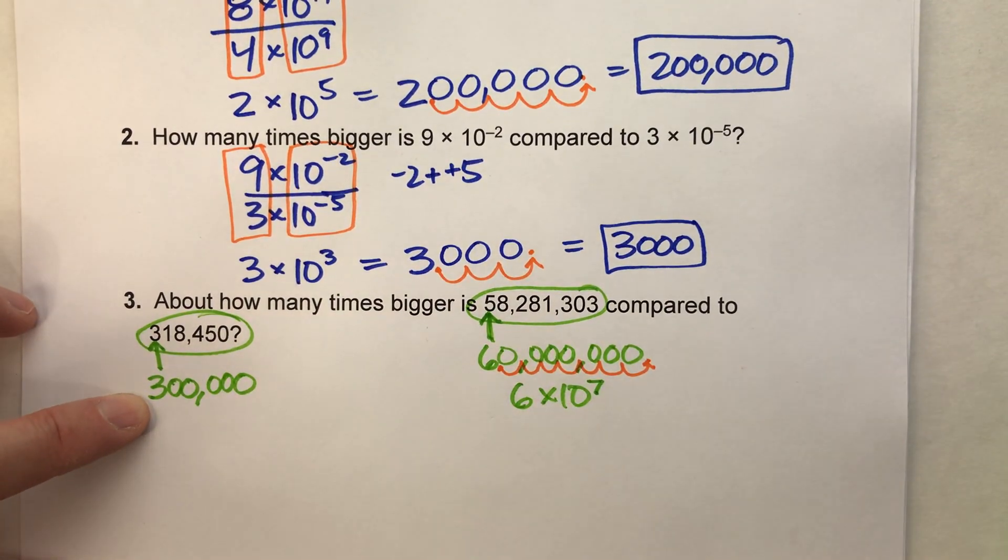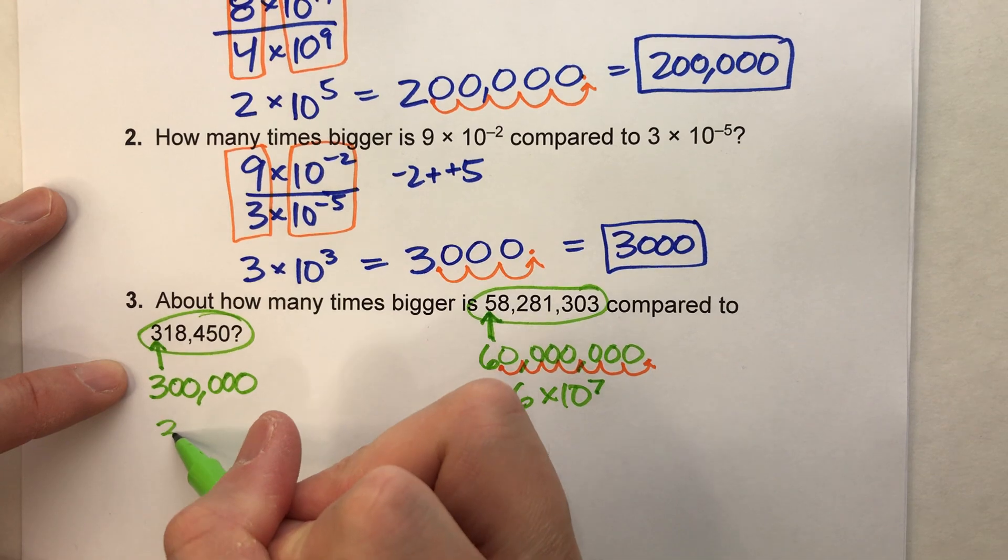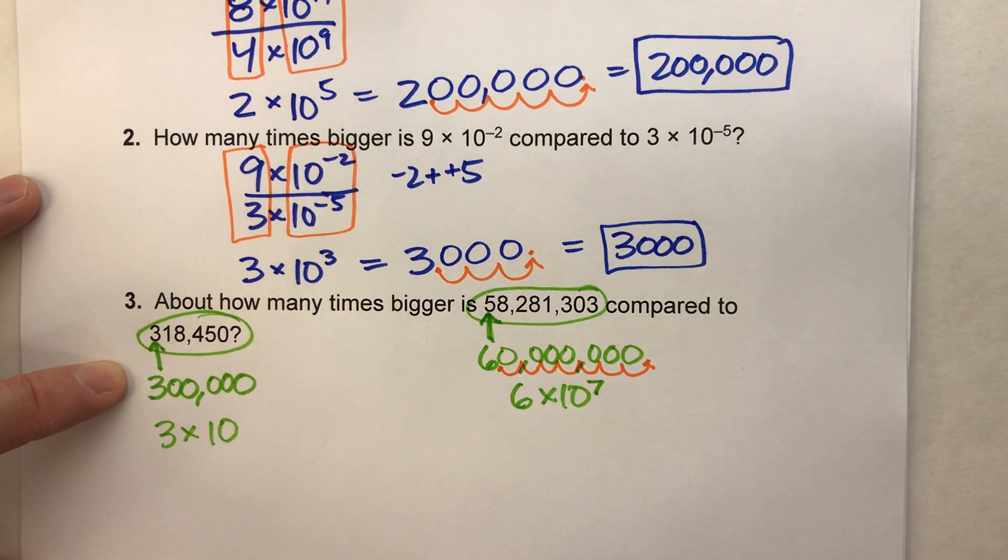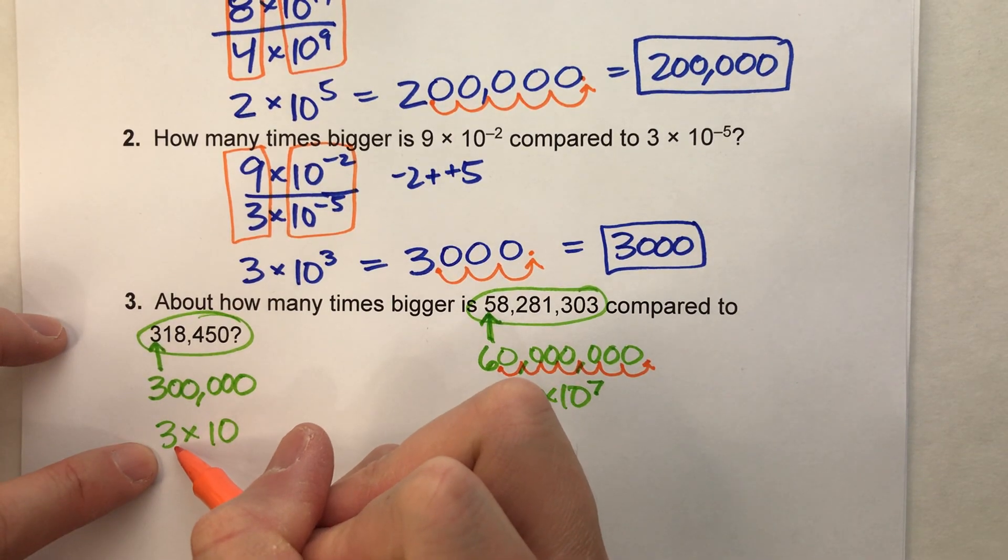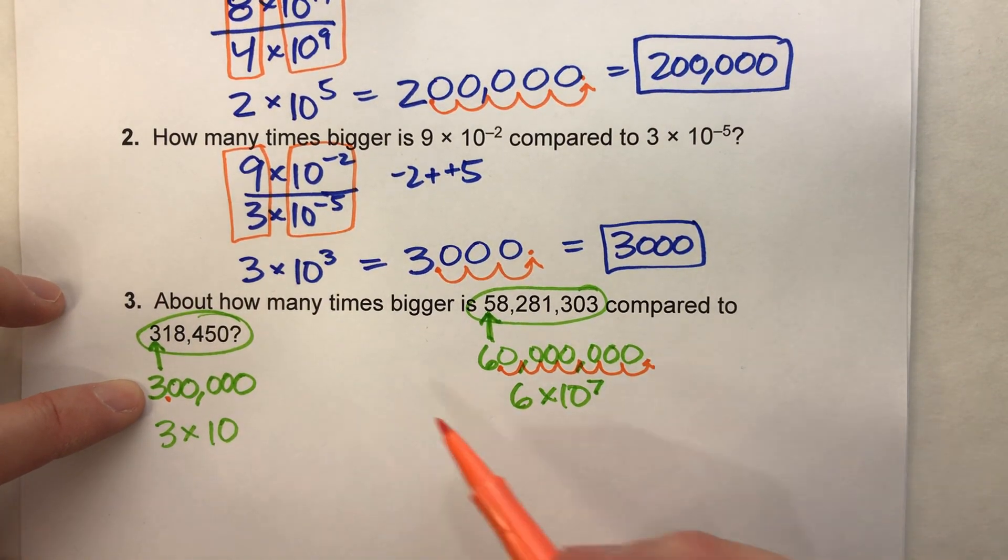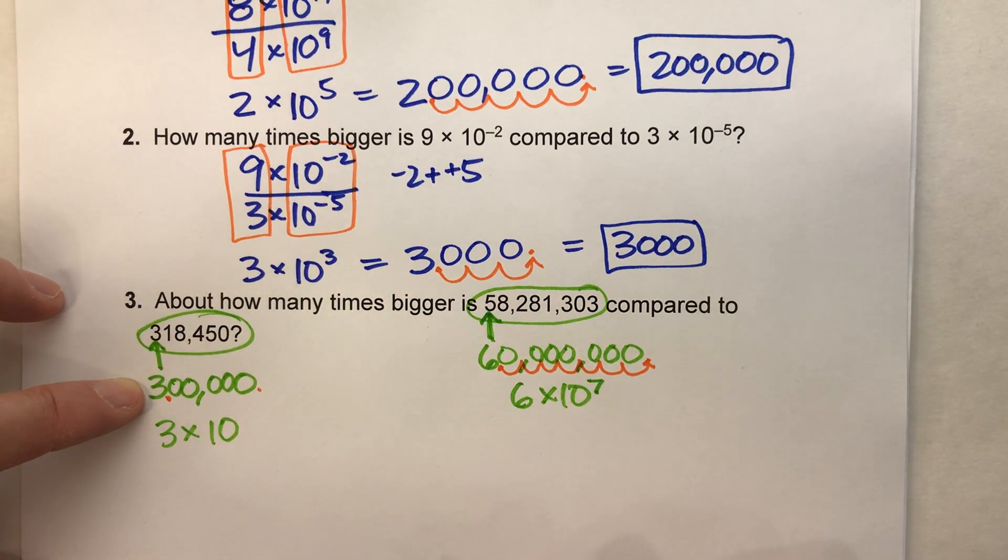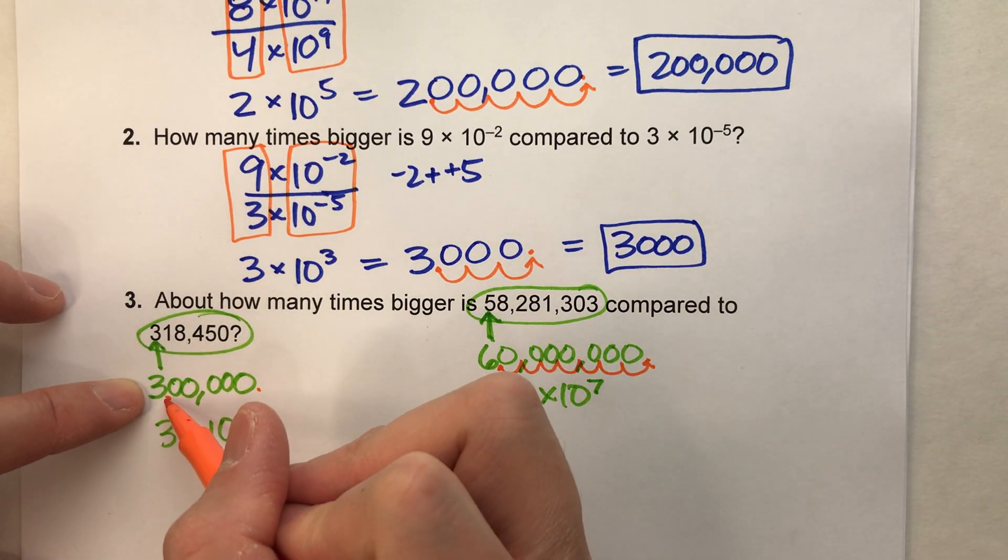And similarly, 300,000 would be three times 10 to some power. But what power? Well, if it was three, like I wrote here, I'd put the decimal there. But we have 300,000, so the decimal is actually over there. So we need to move the decimal point one, two, three, four, five places.